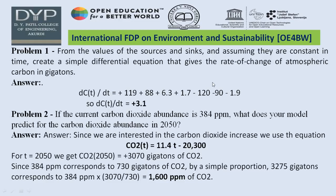Problem one: from the values of the sources and sinks, assuming they are constant in time, create a simple differential equation that gives the rate of change of atmospheric carbon in gigatons. The solution is: dc(t)/dt = +119 + 88 + 6.3 + 1.7 − 120 − 90 − 1.9, so dc(t)/dt = +3.1 gigatons.